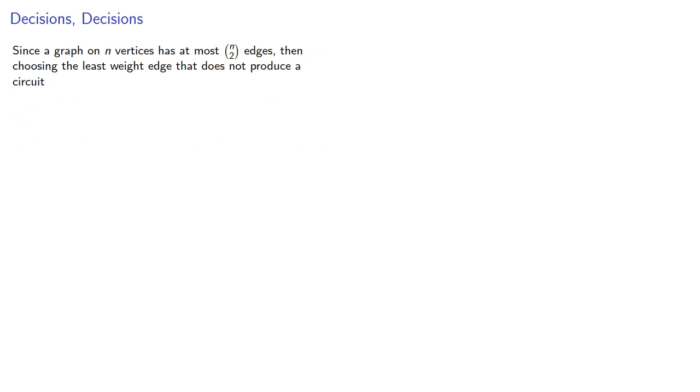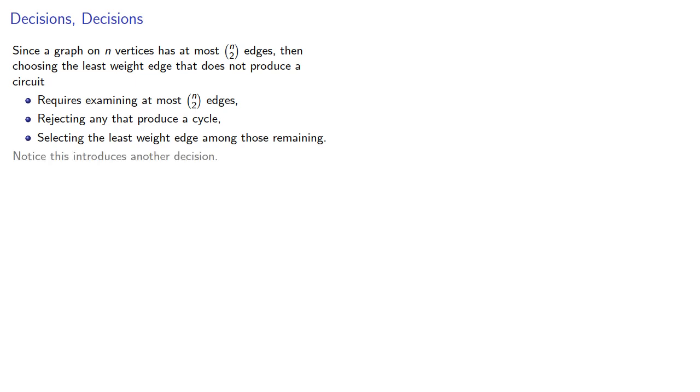Since a graph on n vertices has at most n choose 2 edges, then choosing the least weight edge that does not produce a circuit requires examining at most n choose 2 edges, rejecting any that produce a cycle, and selecting the least weight edge among those remaining.